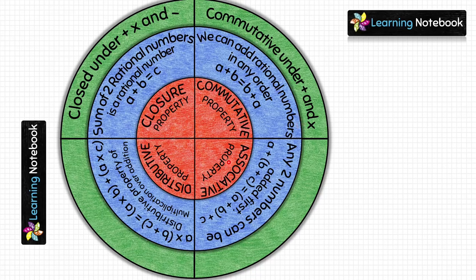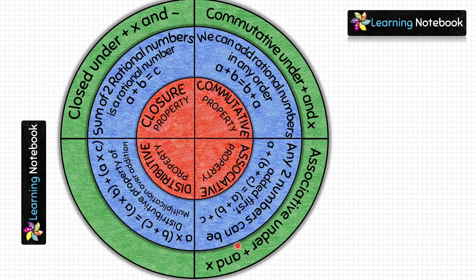For associative property on the green circle, write: rational numbers are associative under addition and multiplication. It doesn't matter which two rational numbers are added or multiplied first — their sum or product remains the same. You can also write that rational numbers are not associative under subtraction and division.